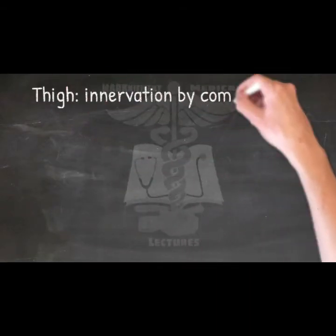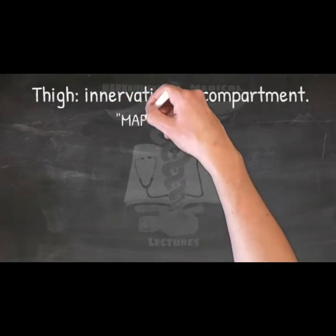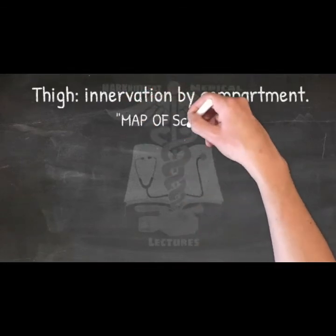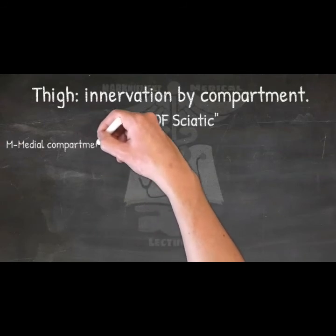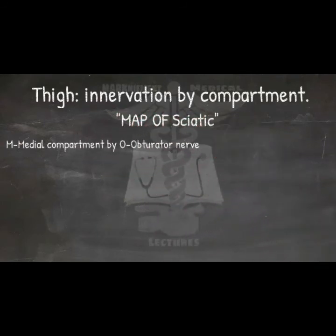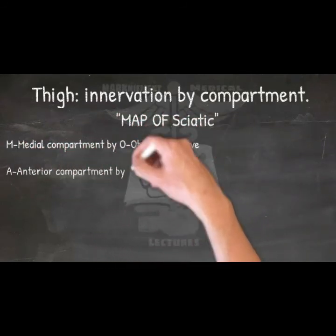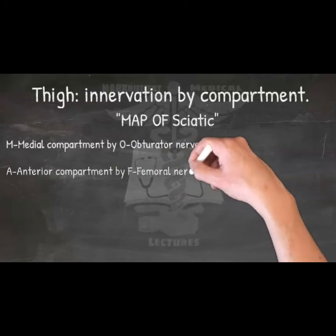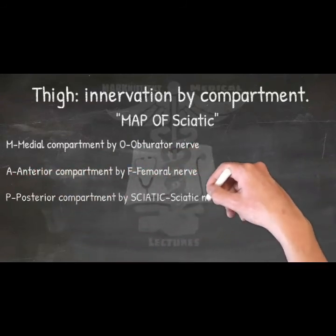Innervation of the thigh by compartment — mnemonic: 'Map of Sciatic.' Medial compartment by obturator nerve, Anterior compartment by femoral nerve, and Posterior compartment by sciatic nerve.